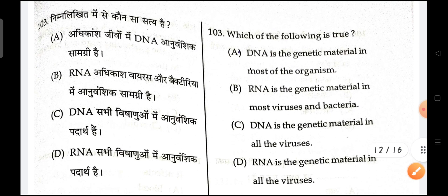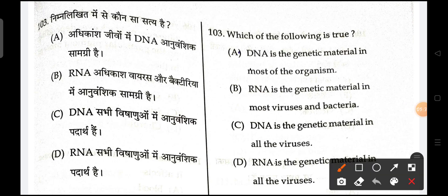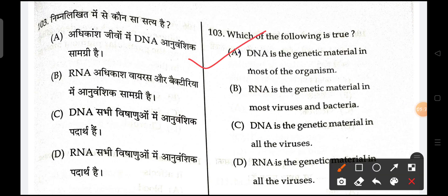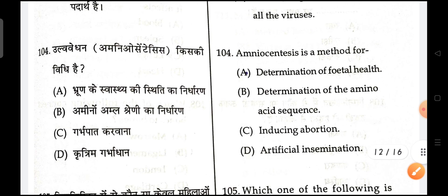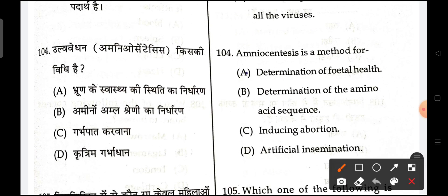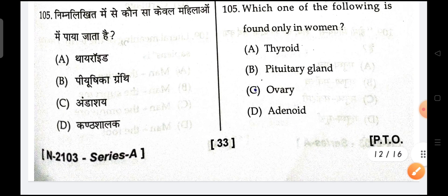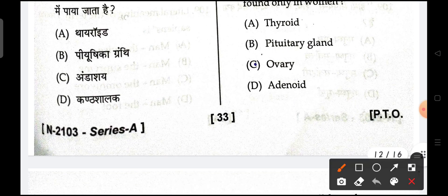Next is, which of the following is true? DNA is the genetic material in most organisms — that is true. Next is, which of the following is found only in women? Ovary is the correct option.